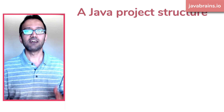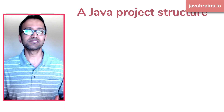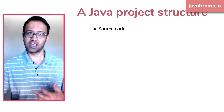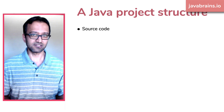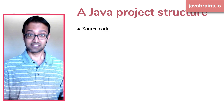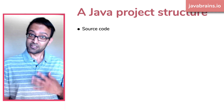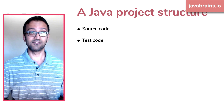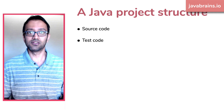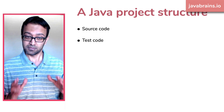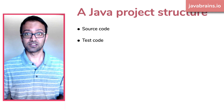What does a Java project need to consist of? First of all, it has to have the source code — all your Java files. Next, it has to have all the test cases, all your test files. If you're using something like JUnit, all your test Java files need to be there.